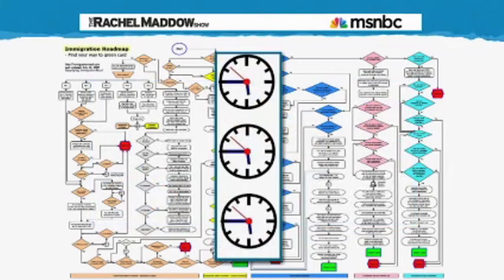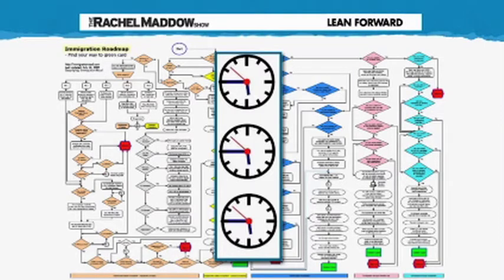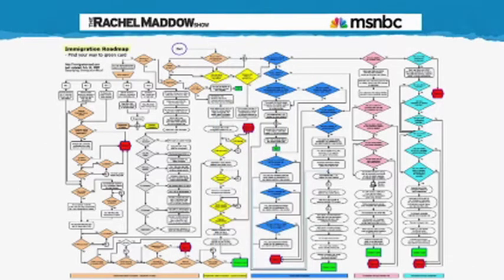There are also, in this chart, all these little clocks embedded in some of the lines to show you places where even though you might be able to proceed from one step to the next, there is a long wait time in between those two steps even if you get to proceed. And of course, those little clocks start to add up as your life goes by. So this is a freaking nightmare — and to a certain extent, this too is a scare chart. But this chart is actually also kind of true.